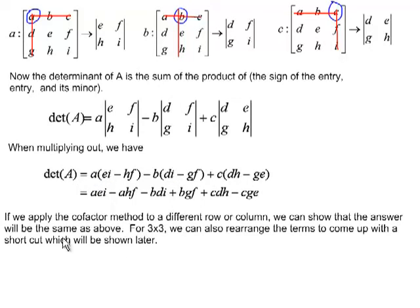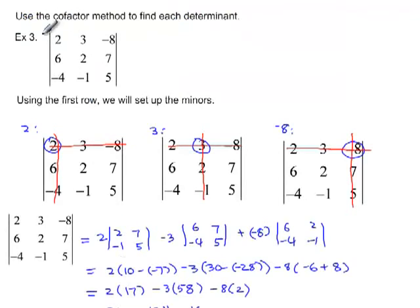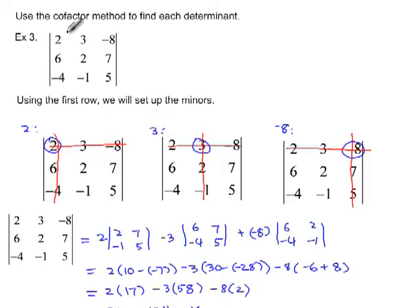Let's look at two examples for a 3 by 3. Example 3: the matrix has first row 2, 3, negative 8; second row 6, 2, 7; third row negative 4, negative 1, 5. We expand using the first row. For entry 2, cross out the first row and first column to get the minor. For entry 3, cross out the first row and second column; the remaining entries are 6, negative 4, 7, 5. For negative 8, cross out the first row and third column; the minor is the determinant of 6, negative 4, 2, negative 1.